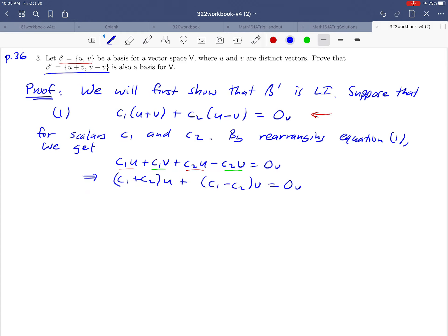Recall that we were given that β is a basis, which means it's linearly independent. Since this is a linear combination of u and v set equal to zero, we know it can only have the trivial solution. In other words, these two constants have to be zero.